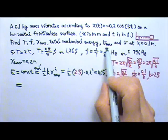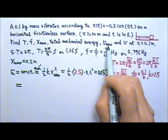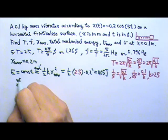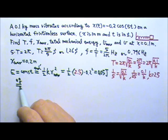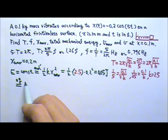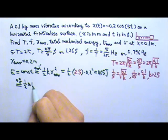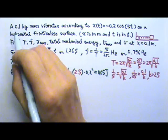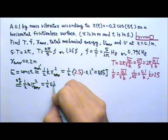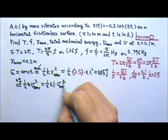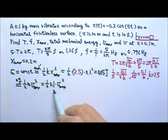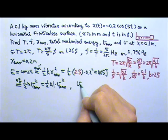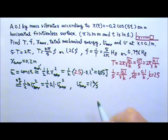And then we want to find the maximum speed. The maximum speed happens at the equilibrium, so we can use conservation of energy and look at the equilibrium. At the equilibrium, there is no energy stored in the spring, there is only 1 half m v squared, and the v is the vmax. So this equals 1 half times 0.1 times the vmax we're looking for squared. And I can set this equal to 0.05 joules, and I will have the vmax to be 1 meter per second.